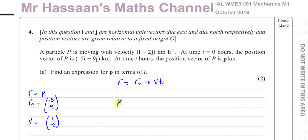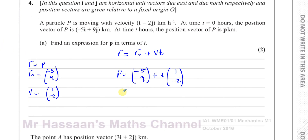So we've got p equals r₀, which is the column vector (minus 5, 9), plus v times t, so t times the velocity vector (1, minus 2). You can leave your answer like this — that's perfectly fine. You could also write it combining terms: the i component as minus 5 plus t, and the j component as 9 minus 2t.